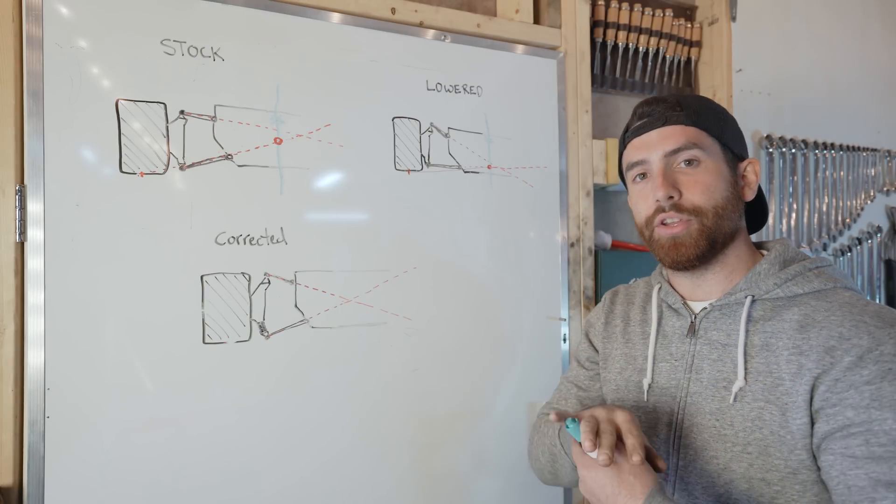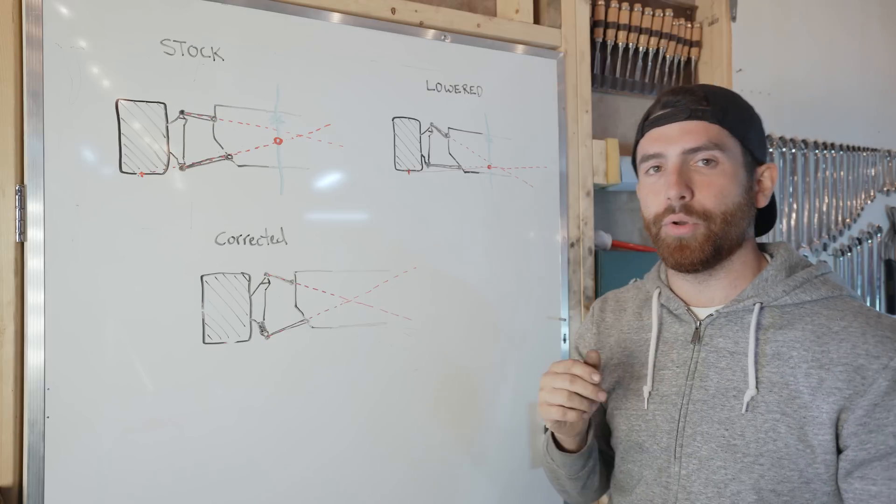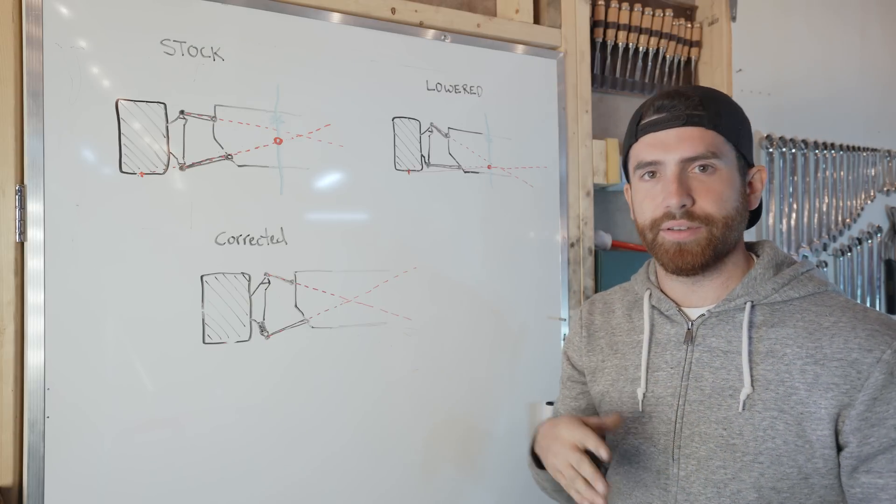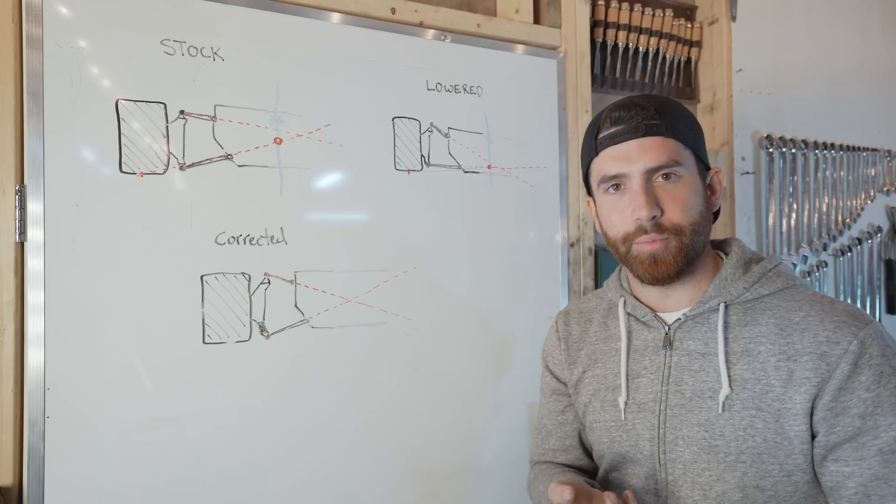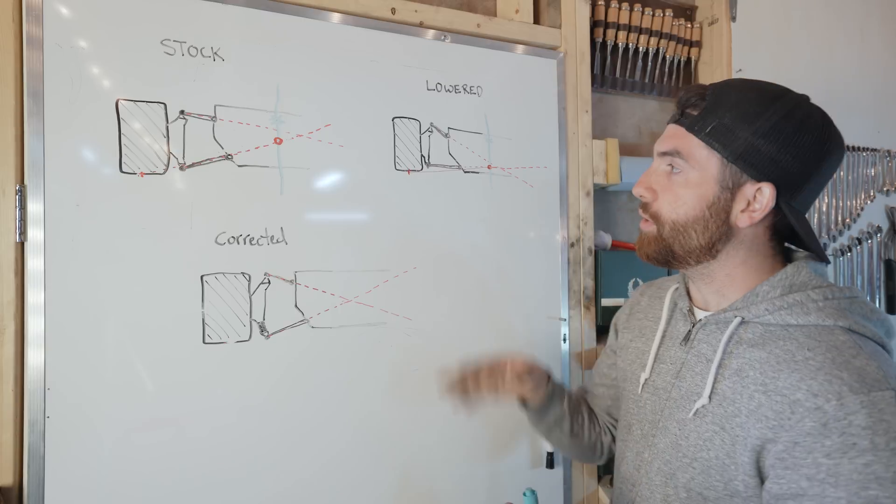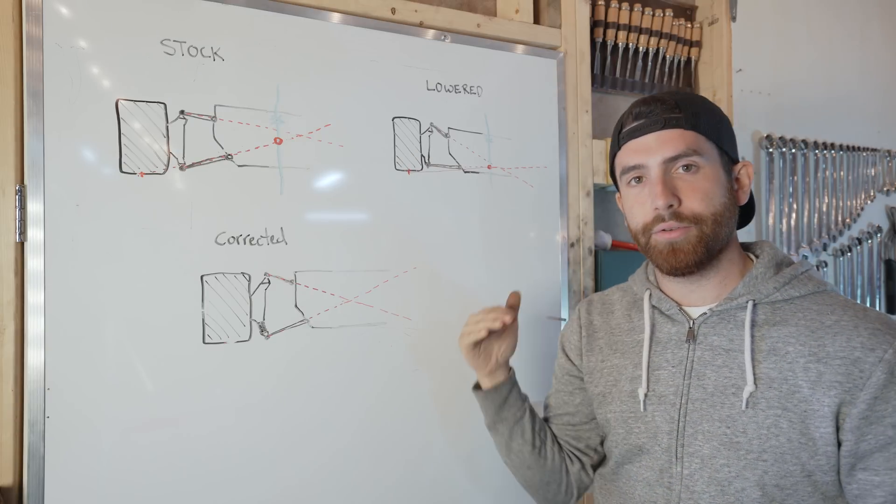Now the bigger the gap, the more mechanical advantage it will have, therefore the more body roll you'll get. So when you lower the car and you affect your roll center, you are actually losing roll stiffness. So you have to compensate by that by adding stiffer springs or bigger sway bars, both of which actually reduce grip.